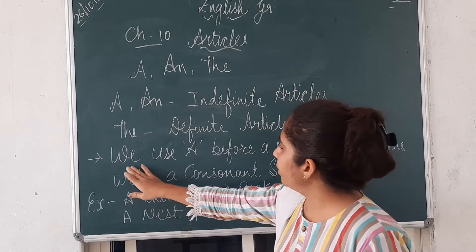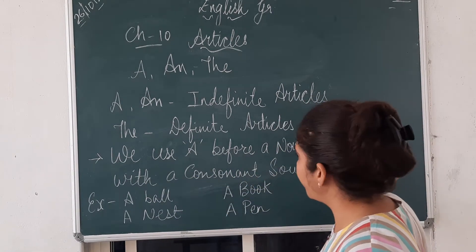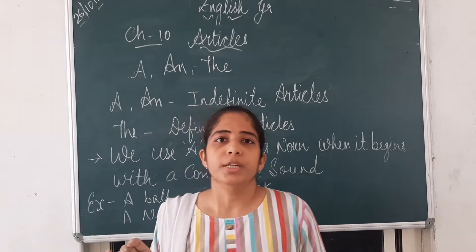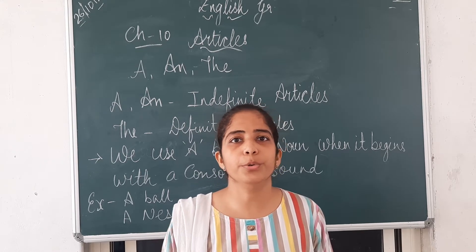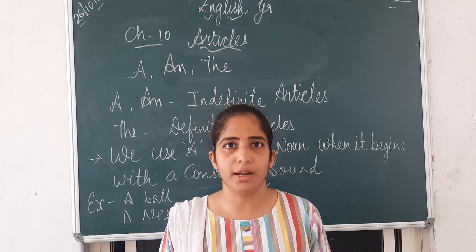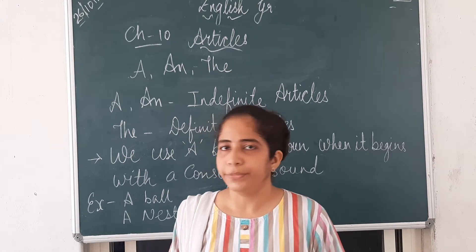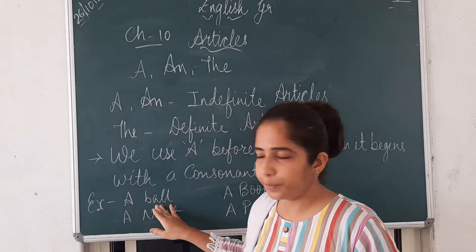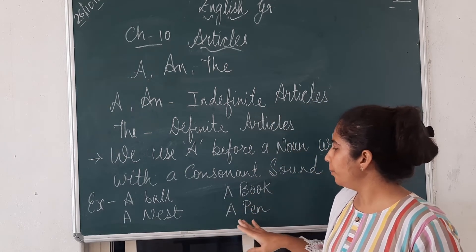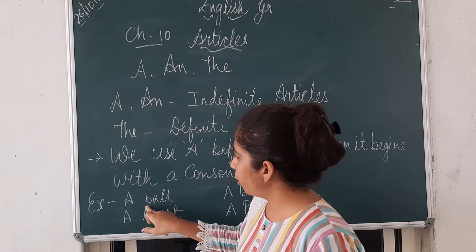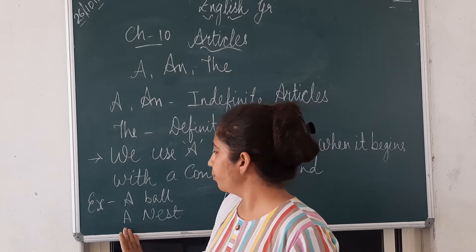We use A before a noun when it begins with a consonant sound. When a word, which is a noun, starts with a consonant sound — meaning not A, E, I, O, U — then we use A before it. See the examples: a ball, a nest, a book, a pen. All these words start with a consonant, so we use A.